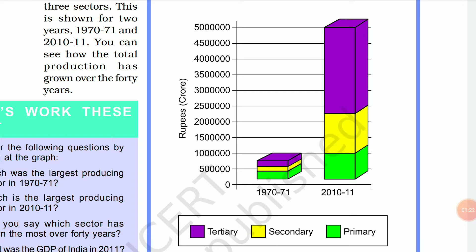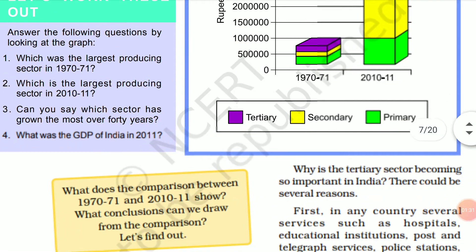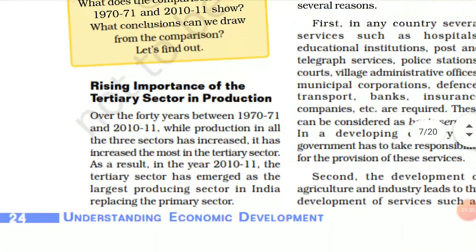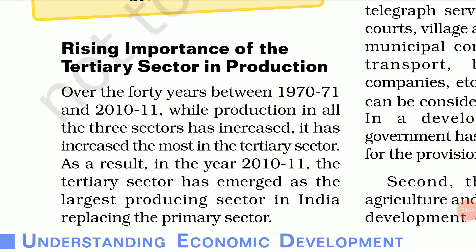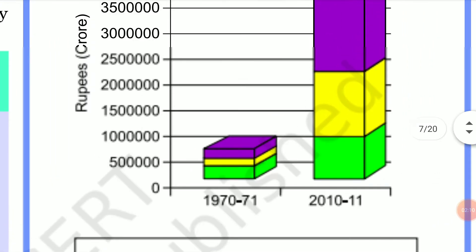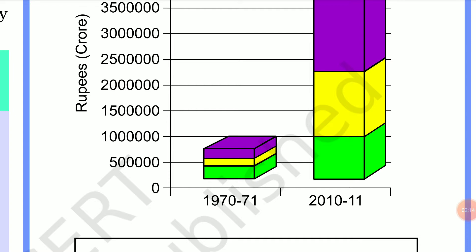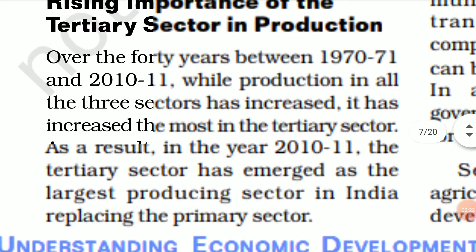So in the present scenario, the tertiary sector contributes maximum to GDP. Over the 40 years between 1970-71 and 2010-11, while production in all three sectors increased, it increased the most in the tertiary sector. All three sectors saw production increases, but the maximum rise has been seen in the tertiary sector.